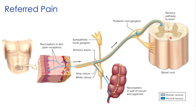Referred pain is another example of the brain being tricked, and can actually be clinically helpful. Referred pain occurs when impulses from certain viscera — such as the heart or appendix — are perceived as originating not from the organ itself, but from the skin at a different location. For example, pain in the appendix is often misinterpreted as coming from the umbilical region. This happens because nervous impulses from cutaneous sensory receptors and visceral sensory receptors can enter the spinal cord through the same posterior roots and are often conducted along the same ascending tracks. The result is that the primary somatosensory cortex incorrectly identifies the pain as coming from the skin rather than from the viscera.